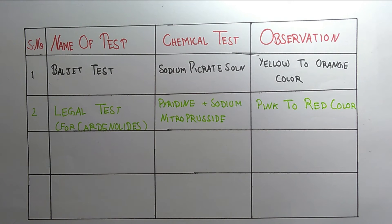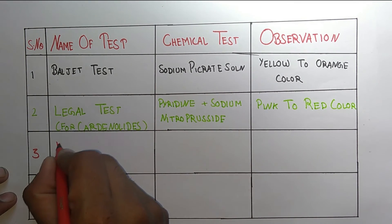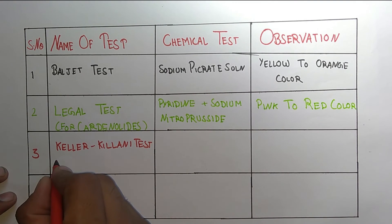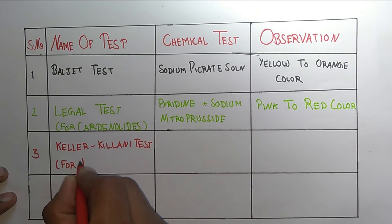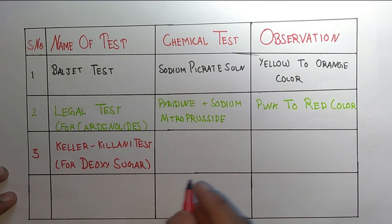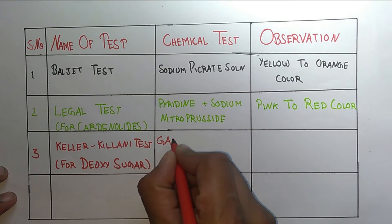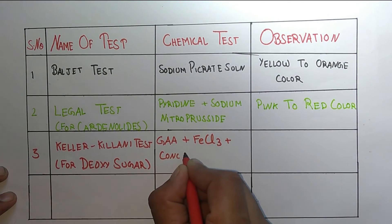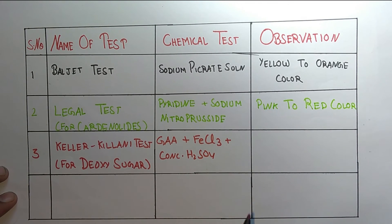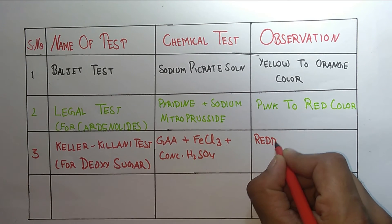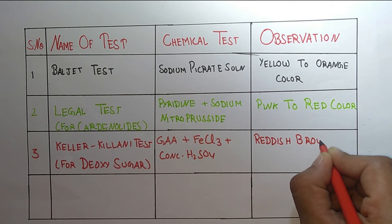The third test is the Keller-Killani test, which is for deoxy sugars. The procedure involves glacial acetic acid plus FeCl3 plus concentrated H2SO4. The observation is a reddish-brown color.